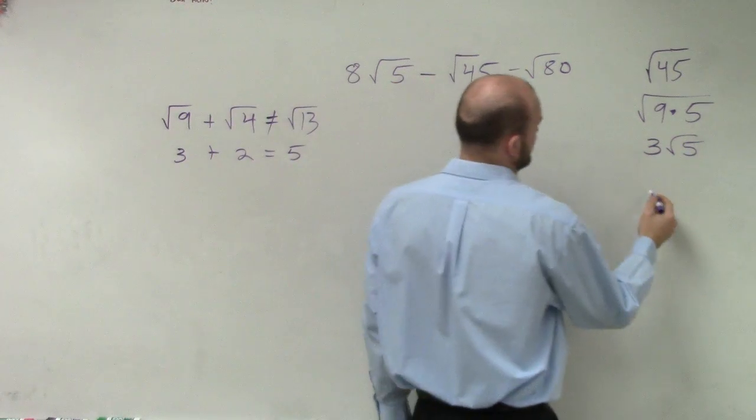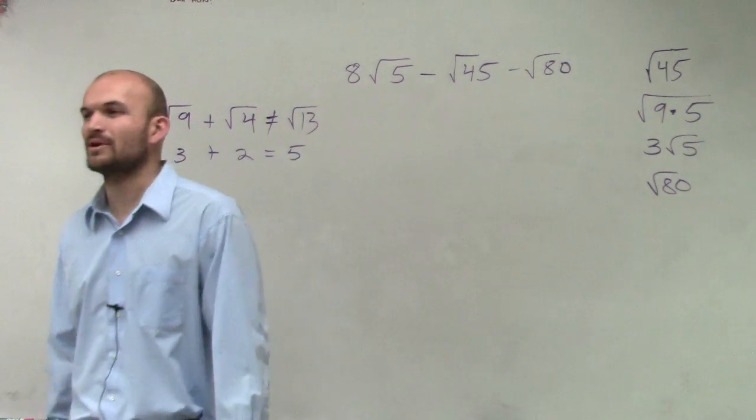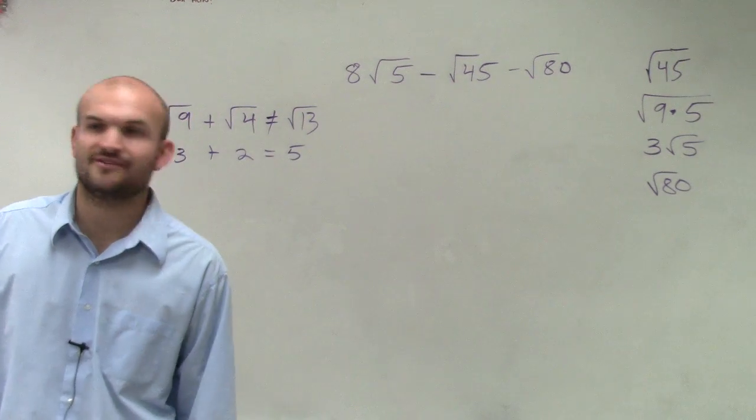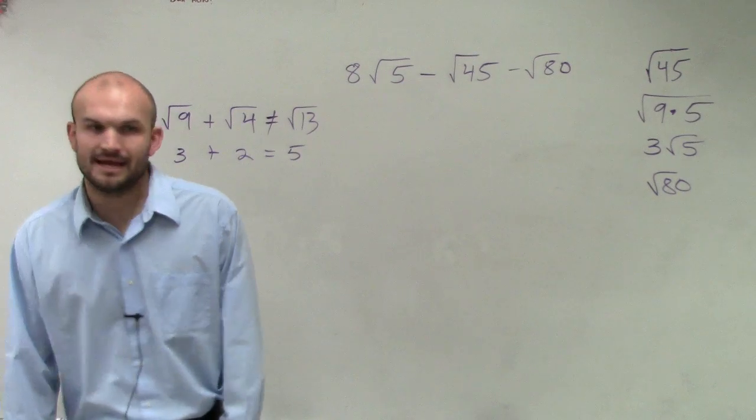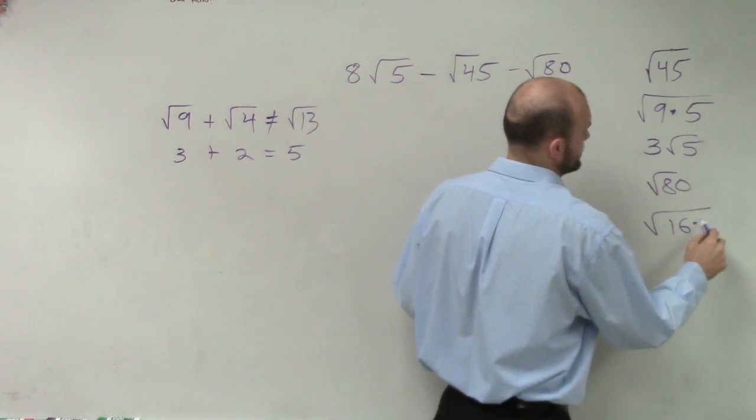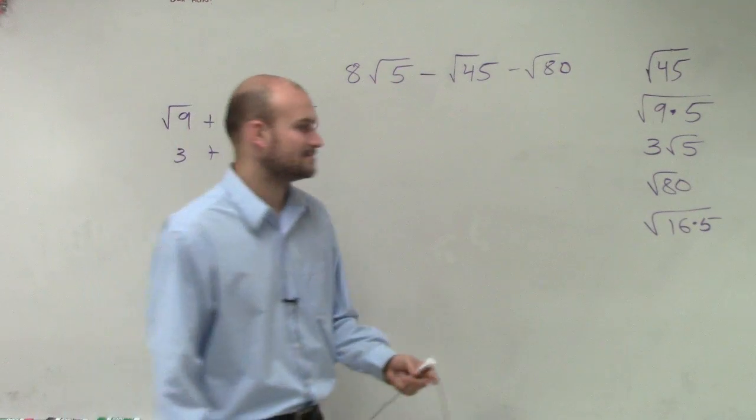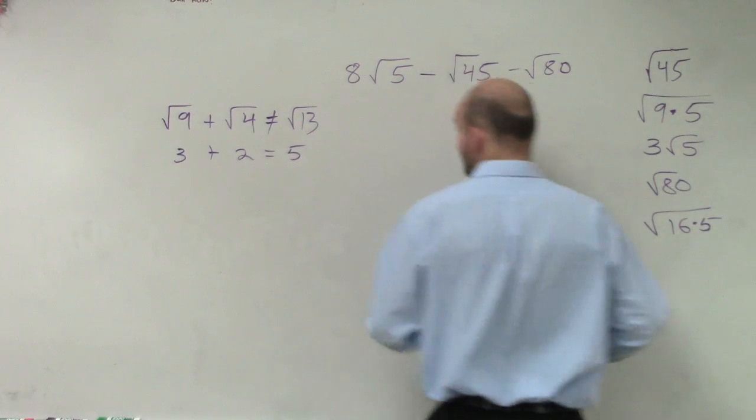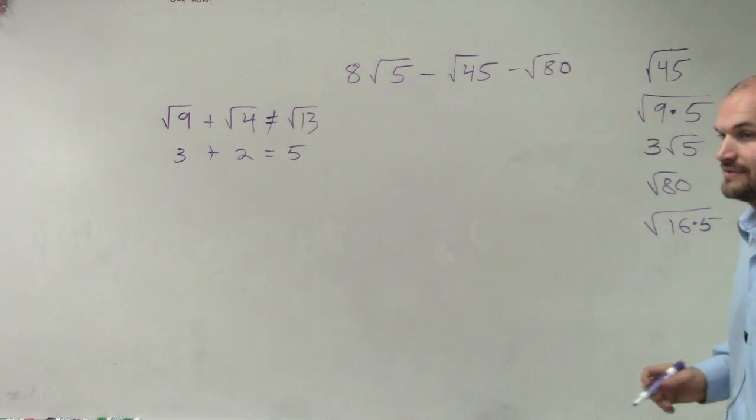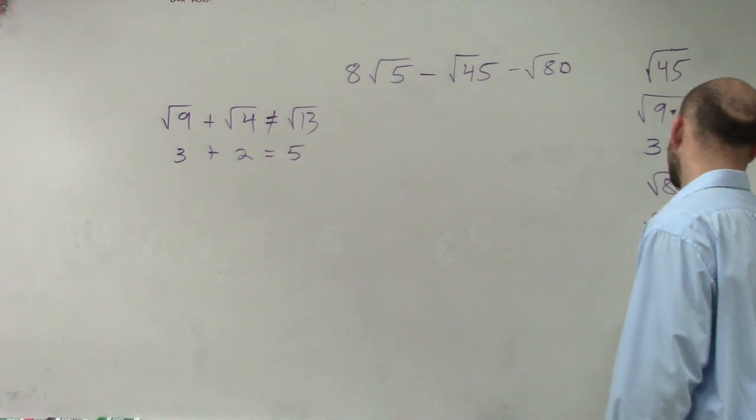Then let's look at the square root of 80. Square root of 80, again, I say, all right, what is the largest square number that divides into 80? And ladies and gentlemen, when you start doing these a lot, you start noticing some patterns, OK? 16 divides into 80 five times. Therefore, you're going to have 4 radical 5.